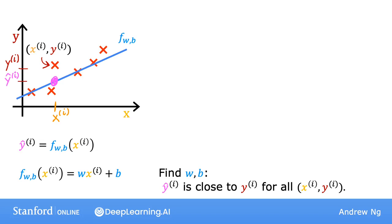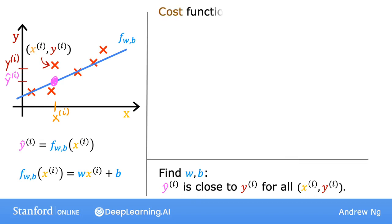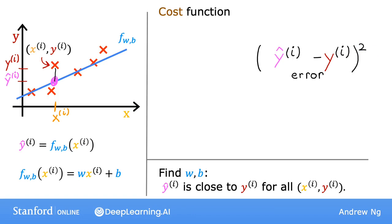To answer that question, let's first take a look at how to measure how well a line fits the training data. To do that, we're going to construct our cost function. The cost function takes the prediction y-hat and compares it to the target y by taking y-hat minus y. This difference is called the error — we're measuring how far off the prediction is from the target. Next, let's compute the square of this error. We'll compute this squared error term for each training example i.